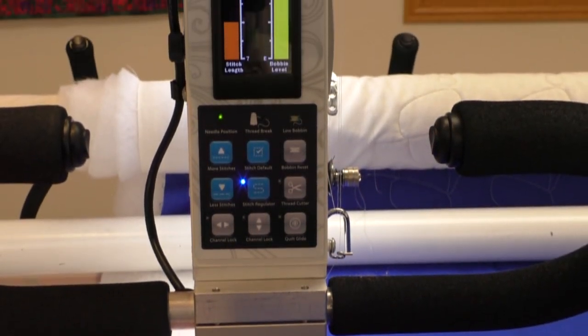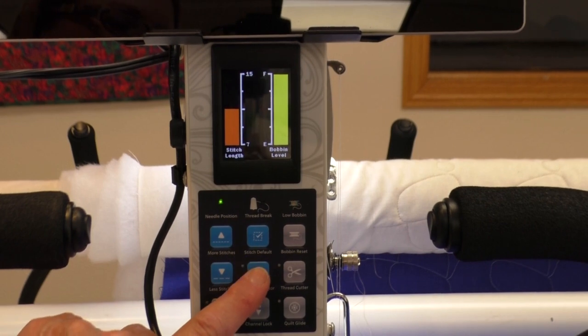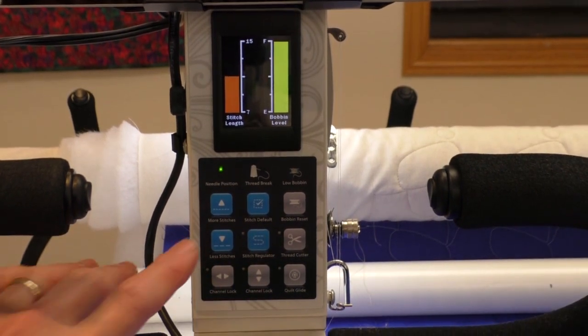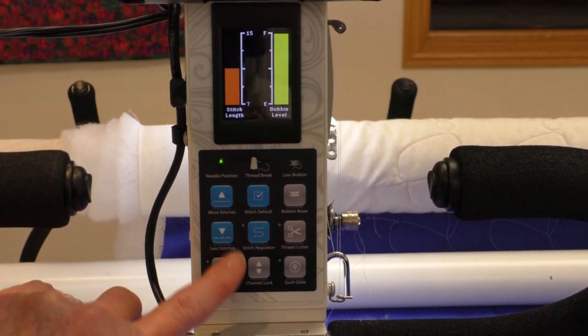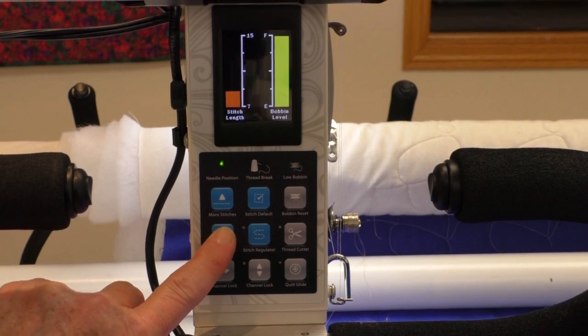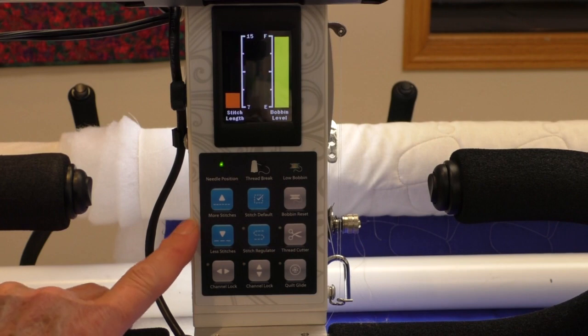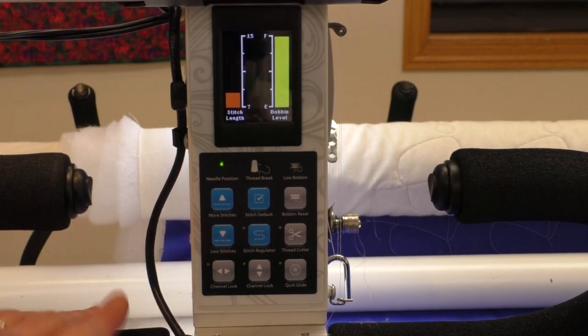On an APQS Millie and Freddie machine, you simply tap the little S that's in the middle of the screen to turn off the stitch regulator, and then I'm going to use the less stitches button to actually reduce the speed of the sewing motor when it's in its constant speed mode. That way I can control the machine a little easier, but the needle will constantly move up and down as I quilt.